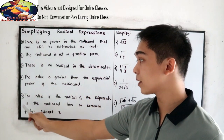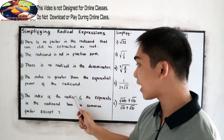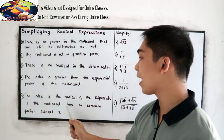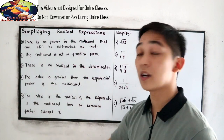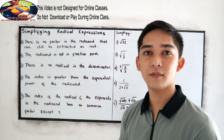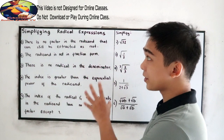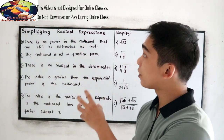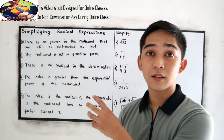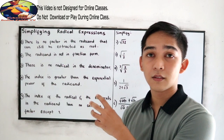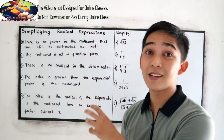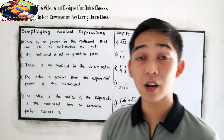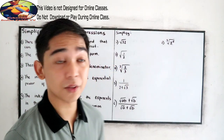And fifth, the index of the radical and the exponents in the radicand have no common factor except one. Those are the characteristics of a radical expression if we're going to check whether it is in simplest form or not. Let's have the following examples to better understand.